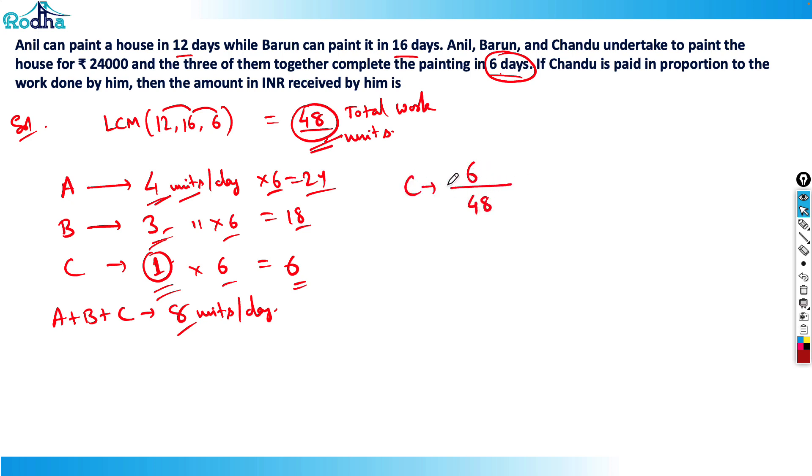Out of 48, C has done 6 units of work, so he'll be getting 1 by 8 of the total amount, which is ₹24,000. So 1 by 8 of ₹24,000 is ₹3,000. That's the answer.